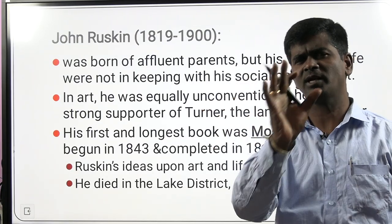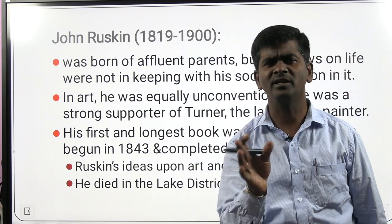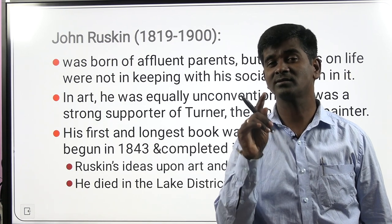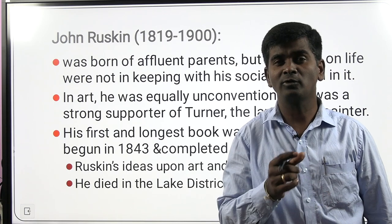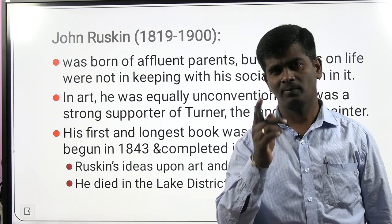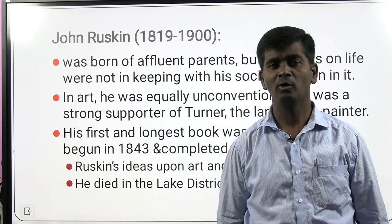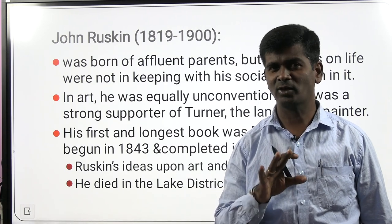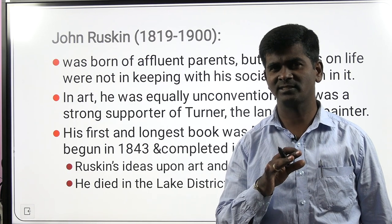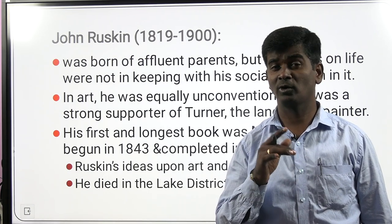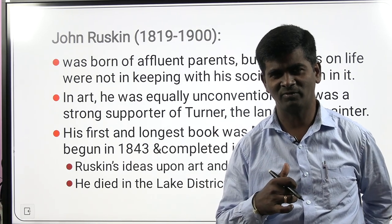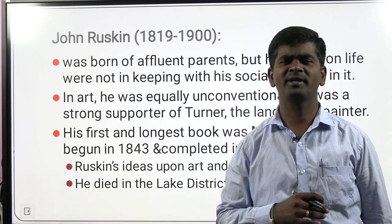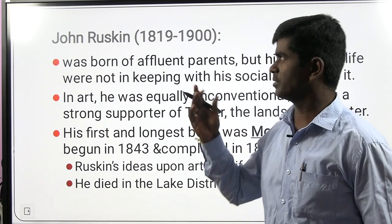Now for John Ruskin — a very important writer. A repeated exam question: which book of John Ruskin influenced Gandhi, Leo Tolstoy, Karl Marx, and Nelson Mandela? The answer is Unto This Last. John Ruskin was only an essayist — not a poet, dramatist, or novelist. He introduced the technique of pathetic fallacy, also called personification or prosopopoeia — attributing human qualities to non-living things. His first collection of essays is The Modern Painters.